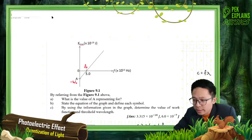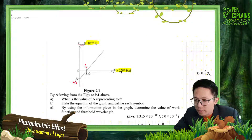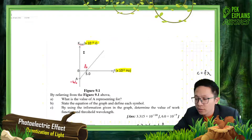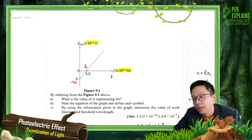This is important, don't forget about this — you must add this. It's not just 5, it is 5 exponent 14. This work function also has exponent negative 19. Many students forget about this, forget to add this to their answer, and then they get a wrong answer.